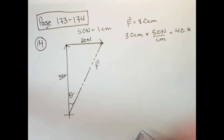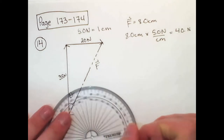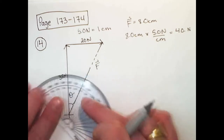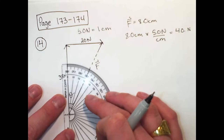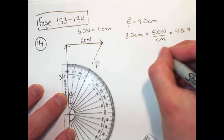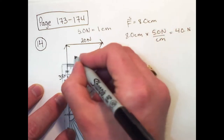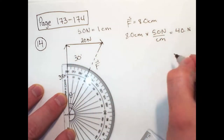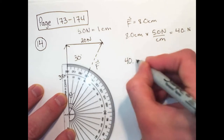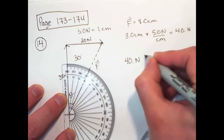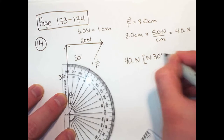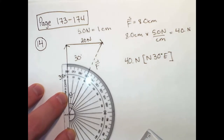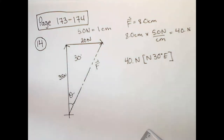We then take a protractor and measure the angle. This angle is 30 degrees by the protractor. So the answer is 40 newtons north, 30 degrees to the east. And that is how we do number 14.